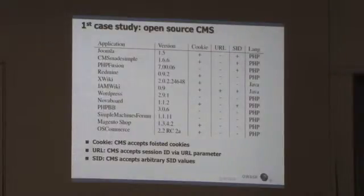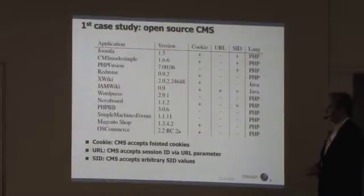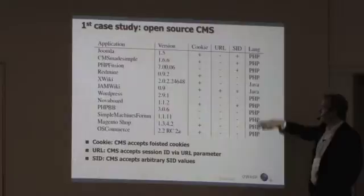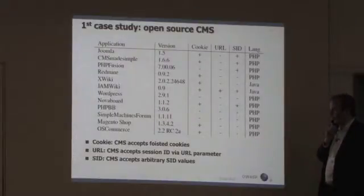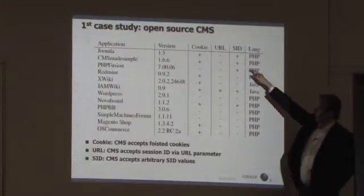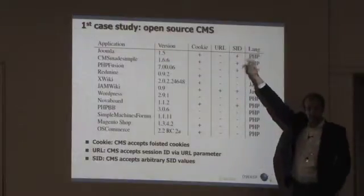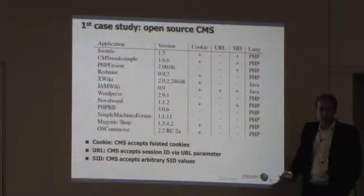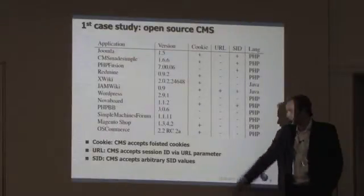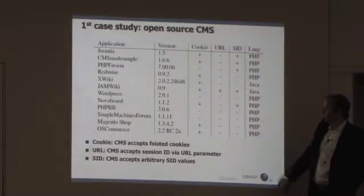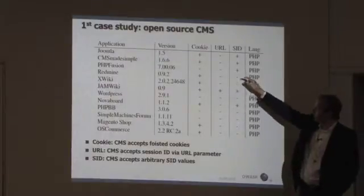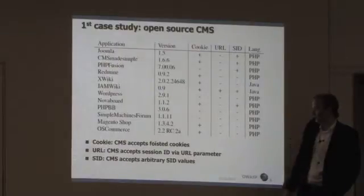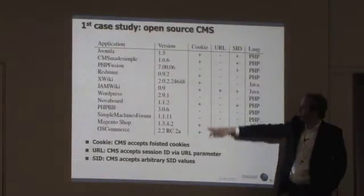The case study looked at content management systems like Redmine, Joomla, and some open source shopping sites, mostly written in PHP. The finding was that these web applications do not generate a session ID themselves — or rather, they accept an arbitrary value as a session ID. This is clearly not a good practice. Most of these systems did not accept URL-based session ID parameters, requiring cookies to be set instead.